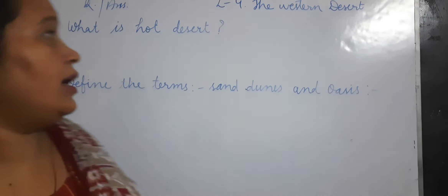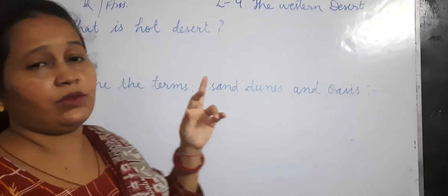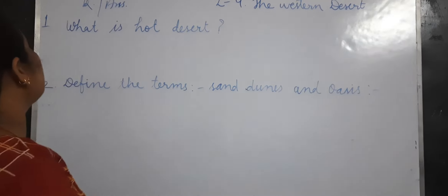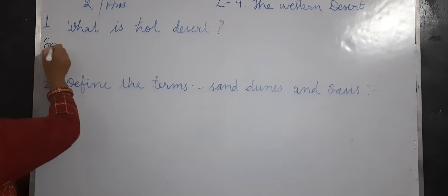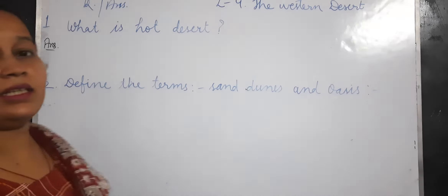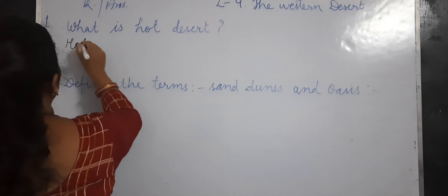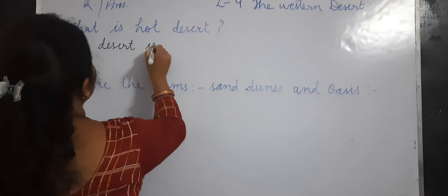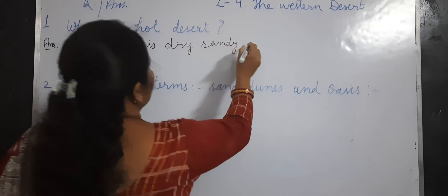This is your SST class and we are going to do today the question answer of Lesson 4. Question 1 is: what is a hot desert? The answer is a hot desert is a dry sandy region.